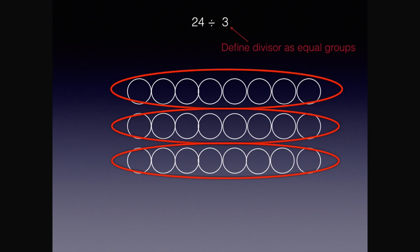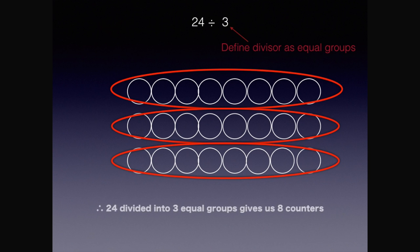Now, once you've done that, count how many counters are in each group. There are 8 counters in 3 different groups. Therefore, 24 divided into 3 groups gives us 8 counters in each group.